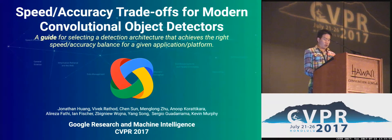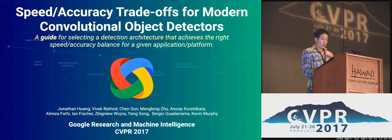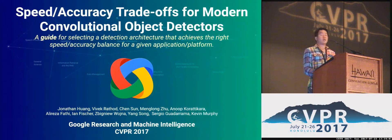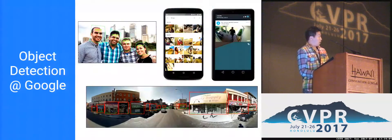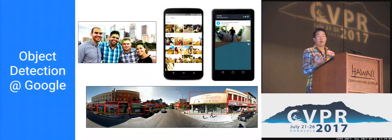As a community, we often tend to care more about models that push the envelope on accuracy. Which model did best on ImageNet? Which model did best on COCO? But speed is just as important, and we have product teams that would like to deploy an object detector.